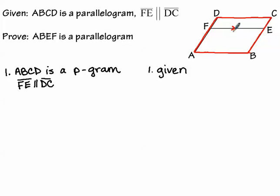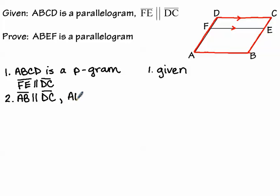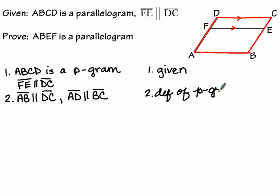That second given tells me I want to look at parallelism. In that red parallelogram, I know that both pairs of opposite sides are parallel. Segment AB along the bottom must be parallel to segment DC across the top, and segment AD on the left is parallel to segment BC on the right — that's by the definition of a parallelogram.